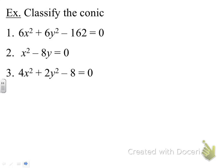For number 3, we ignore everything except the two squared terms. We look at these two coefficients: A is 4, C is 2. Since they have the same sign but are different values, we know this equation is an ellipse.